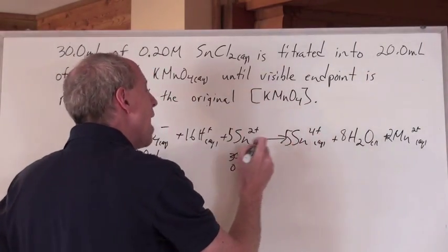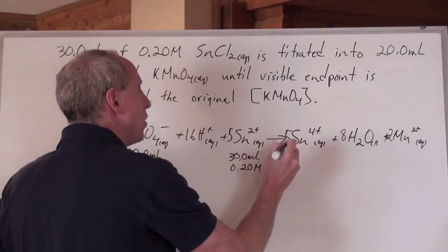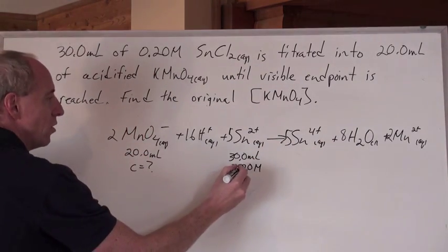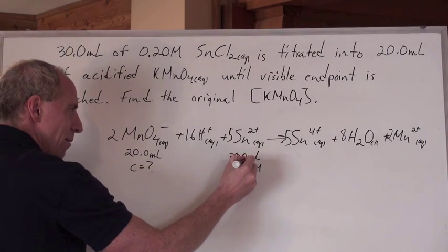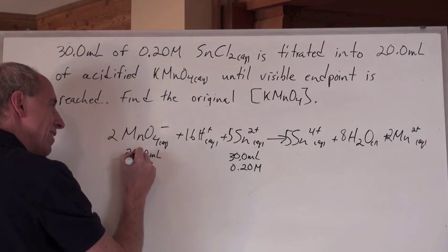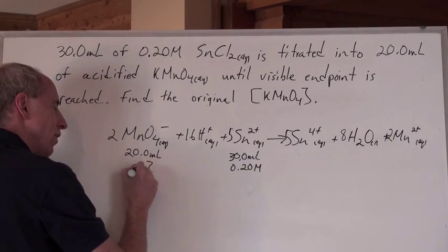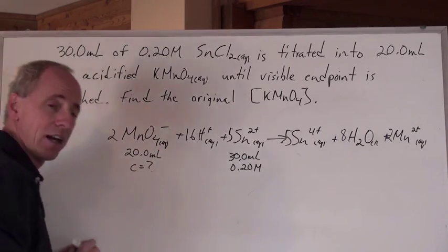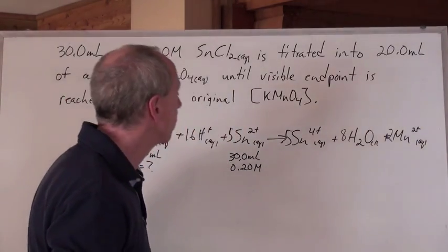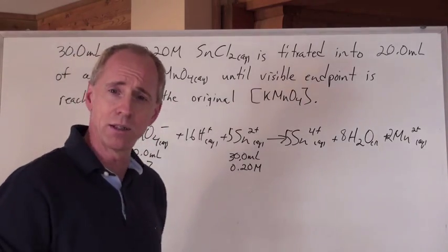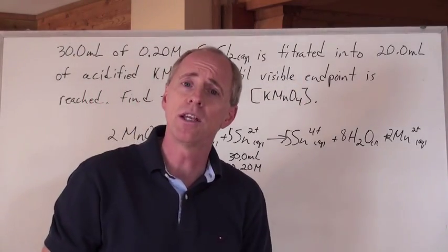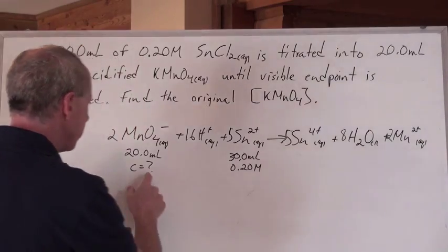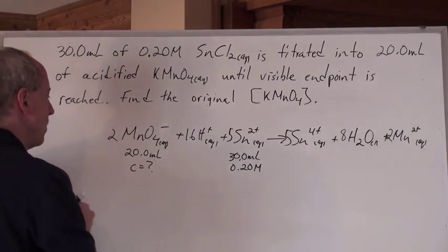But what I can do now is say, if I know that it took 30 milliliters to titrate of this chemical at this concentration into here, I can actually figure out what the concentration was, that unknown concentration. So look, it's just a matter of doing a little bit of solution type of stoichiometry to be able to determine this unknown concentration.